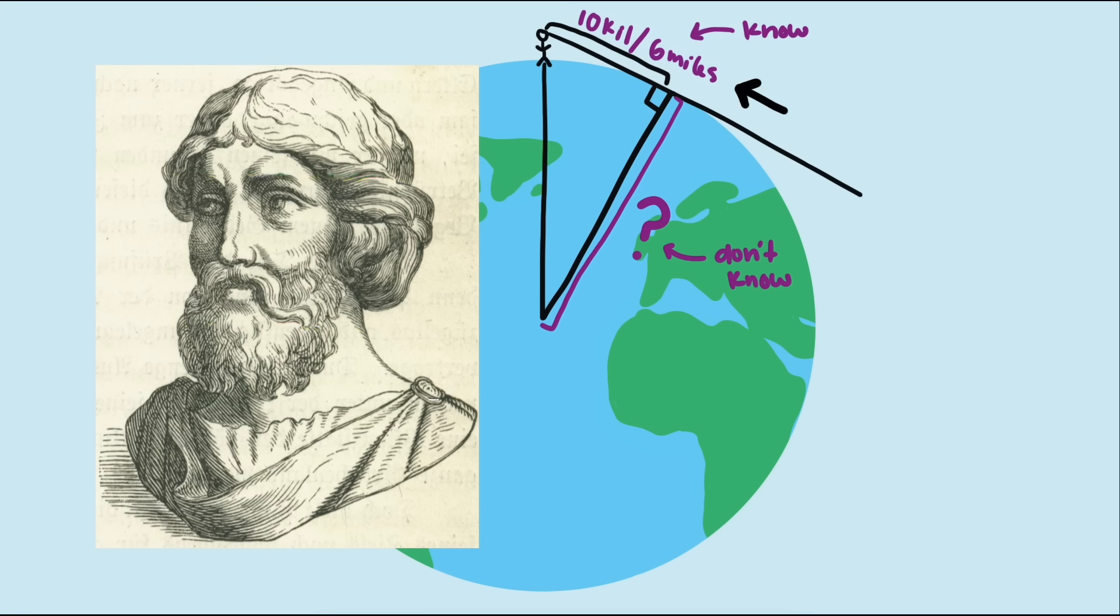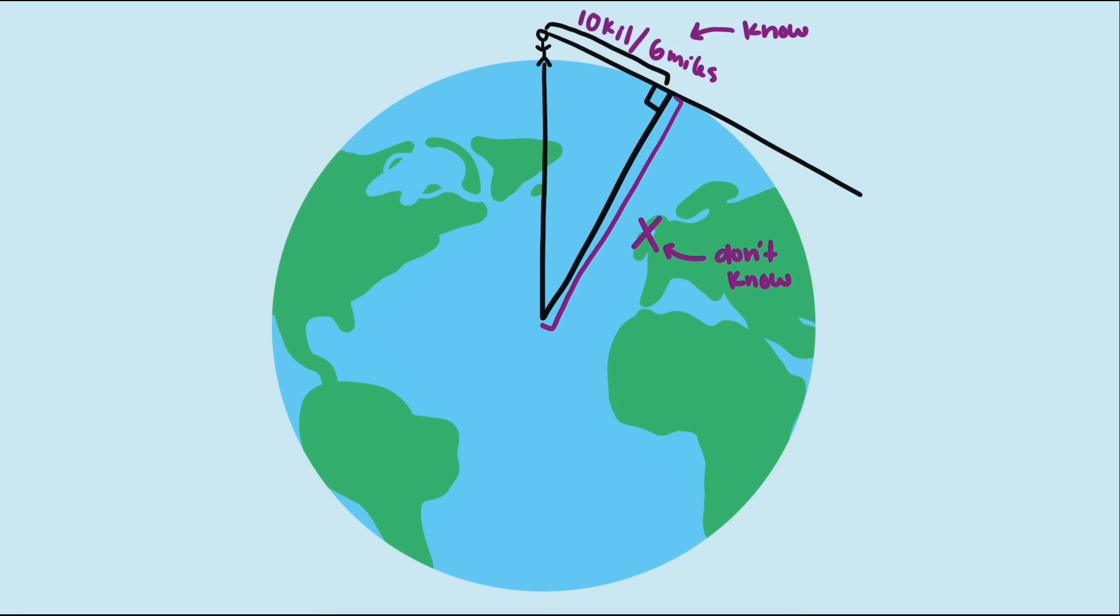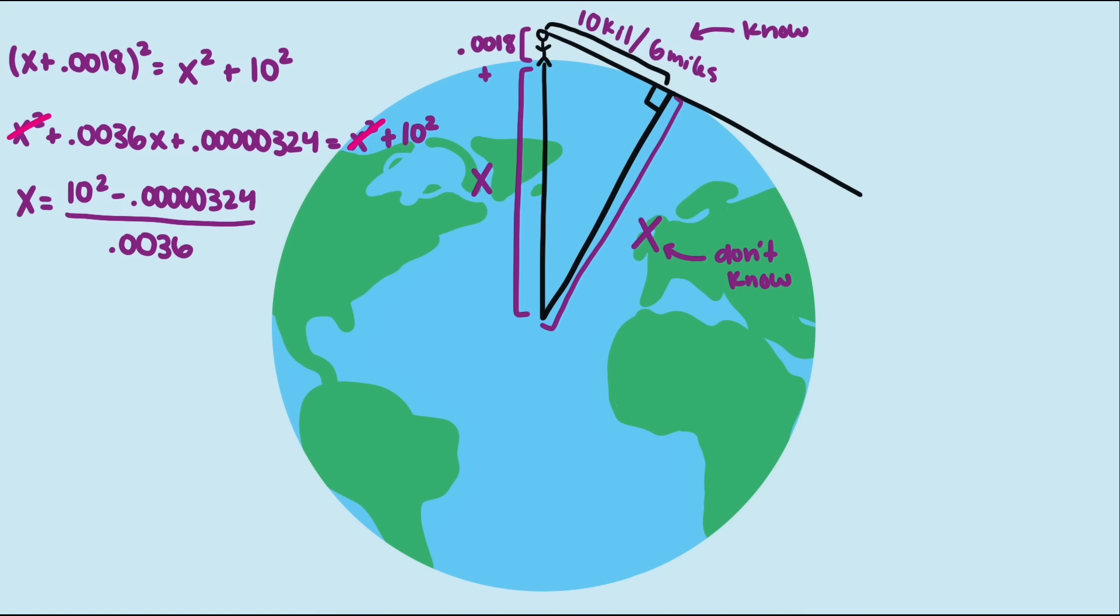We know that this leg is 10 kilometers, and instead we want to know the length of this leg, which is the radius of the Earth, and we will label X. That means our hypotenuse is X plus 0.0018, and solving for X gives us a radius of almost 28,000 kilometers.